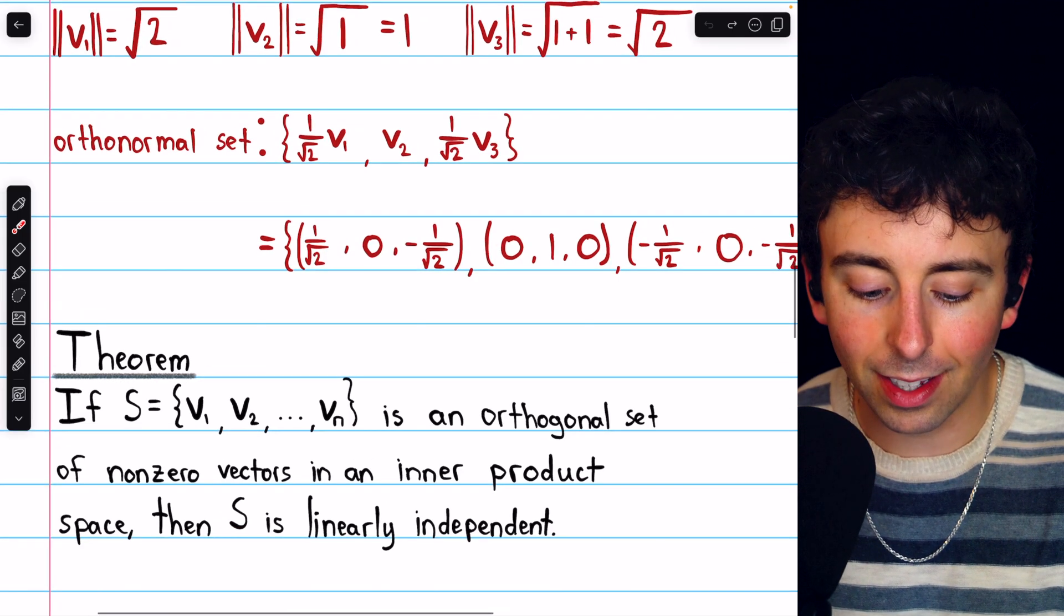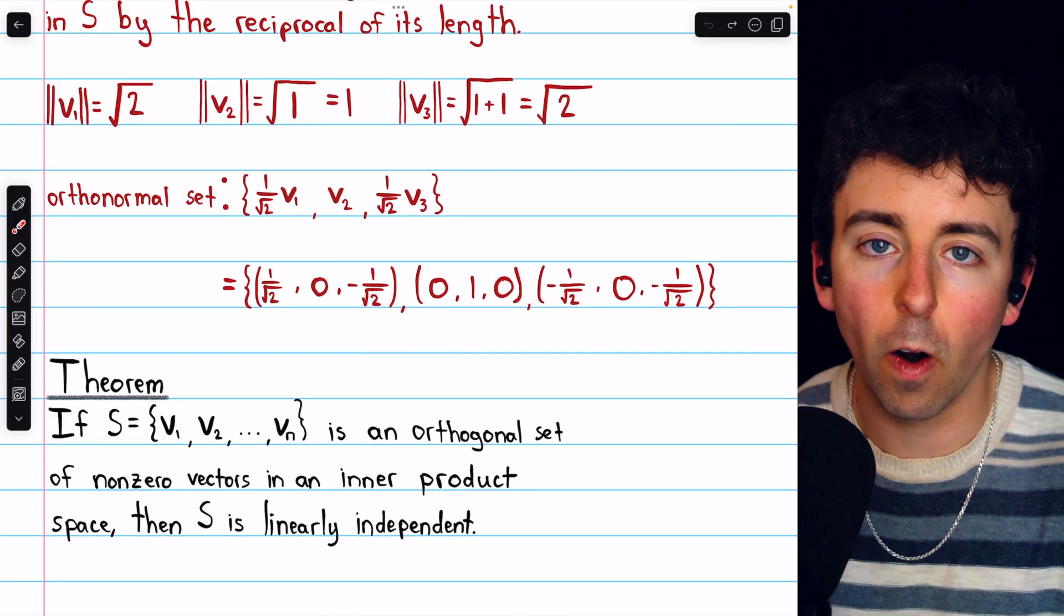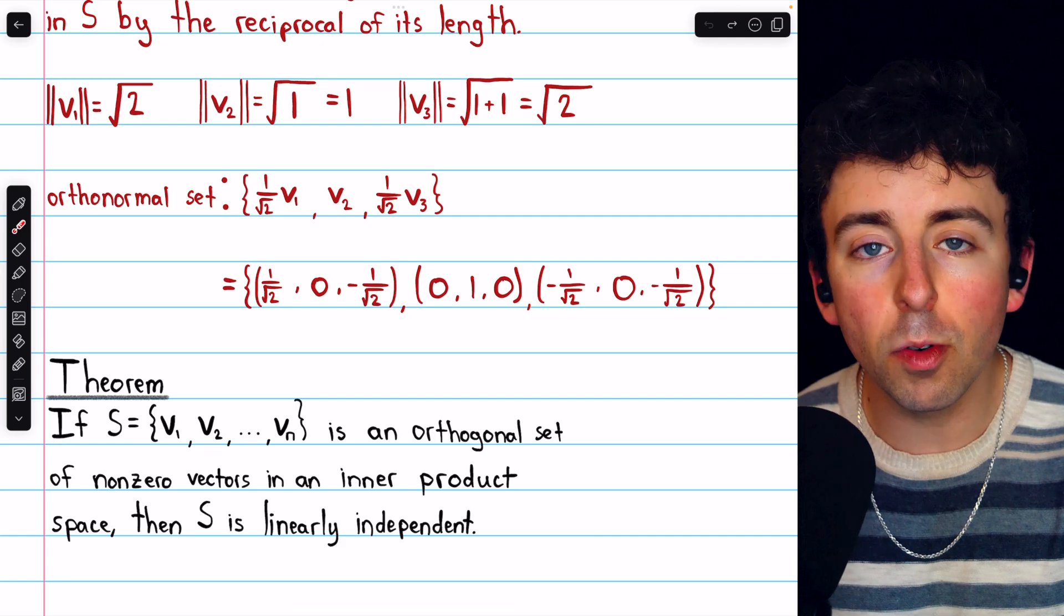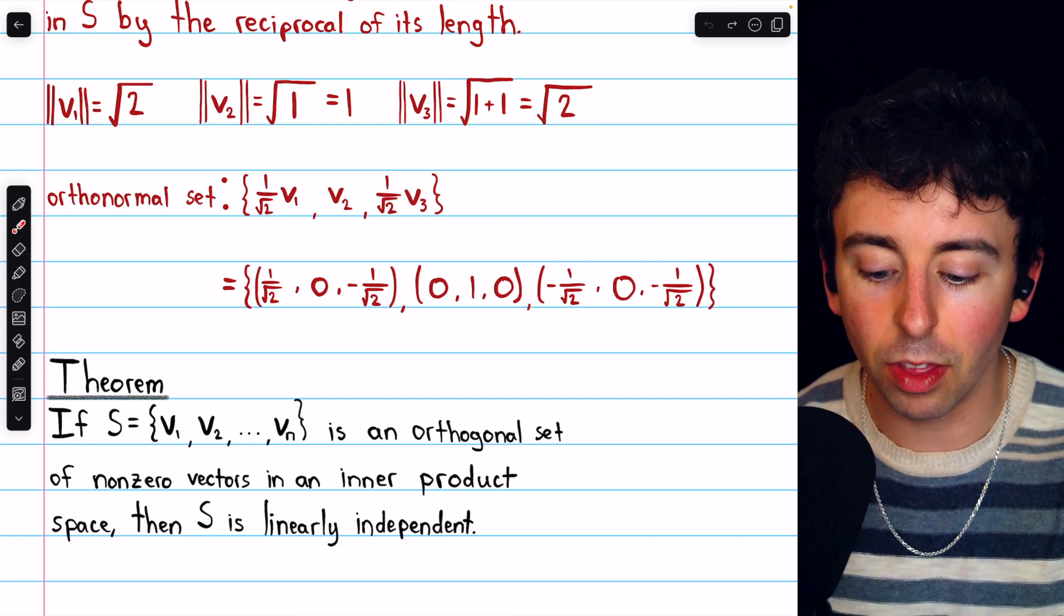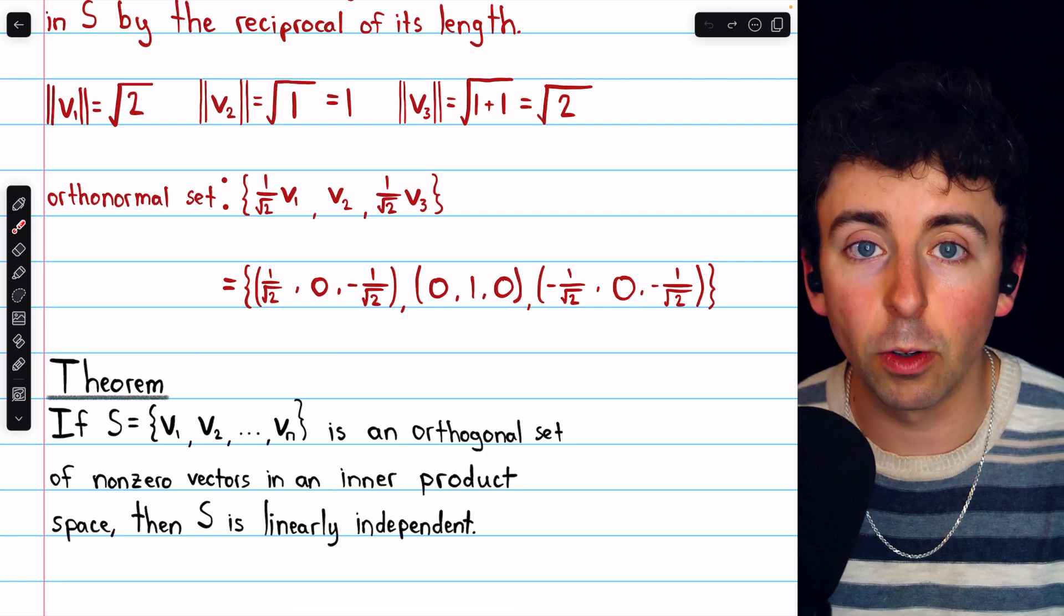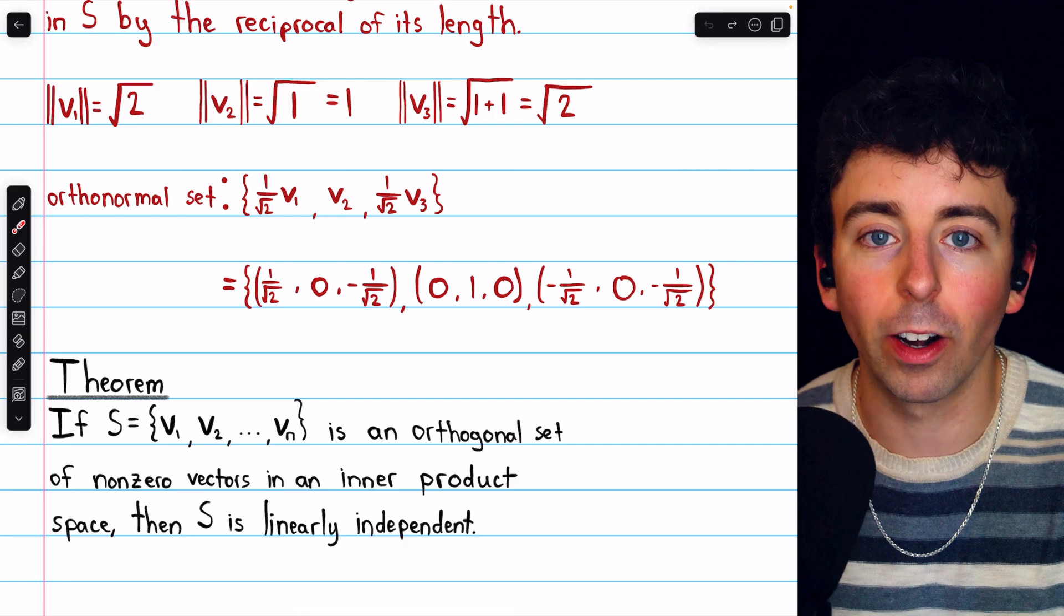So tying this back to the example we just did, we had this set of orthogonal vectors in R cubed. R cubed has dimension 3, and since this is a set of 3 orthogonal vectors, they are linearly independent, and hence they must form a basis for R cubed.